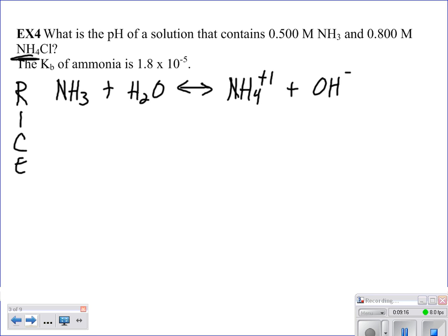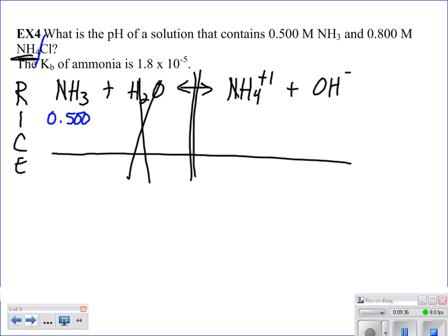When I read through my problem, I see that I start with 0.5 molar ammonia. And I also start with 0.8 molar ammonium chloride. Very soluble. Breaks into its ammonium ions and chloride ions. We don't care about those chloride ions, but we do care that it gives us 0.8 molar ammonium ions. And we have no hydroxide ions to begin with.